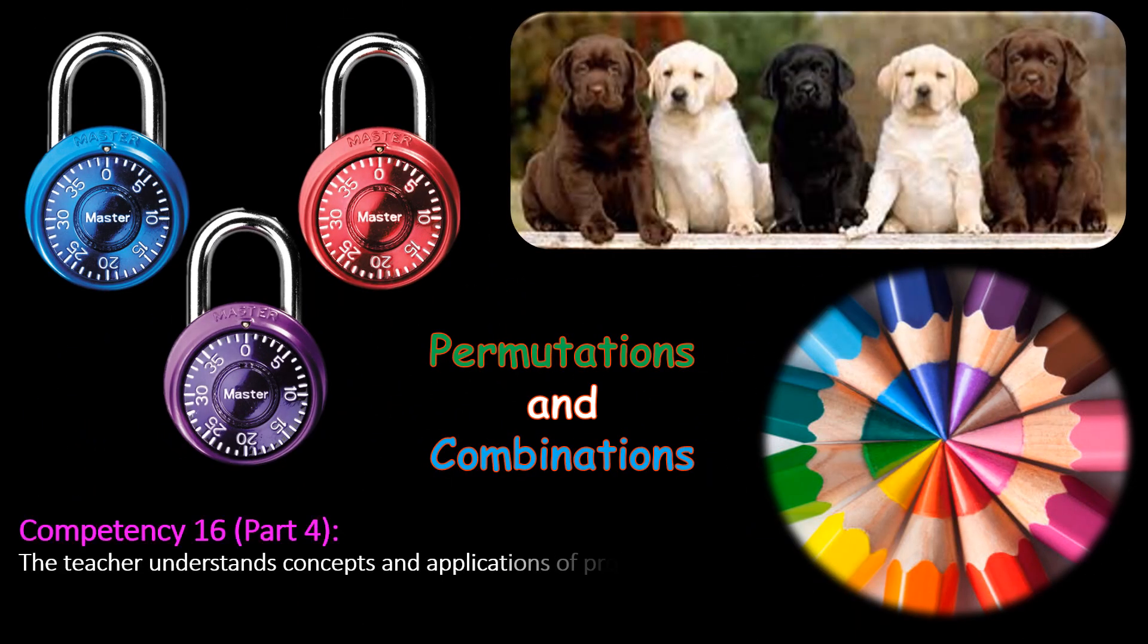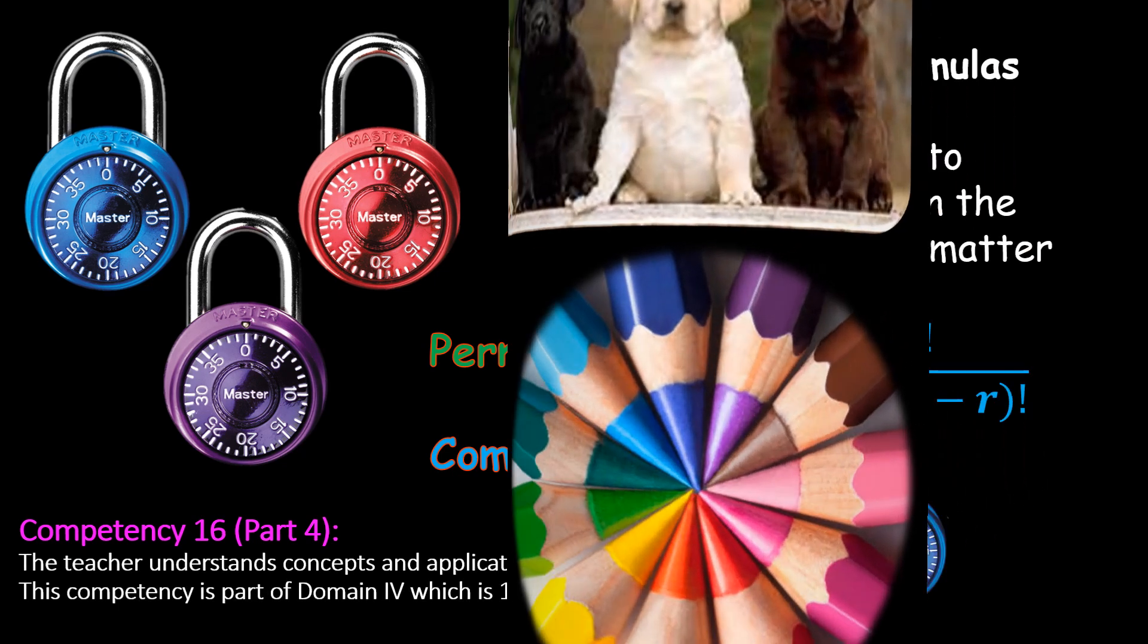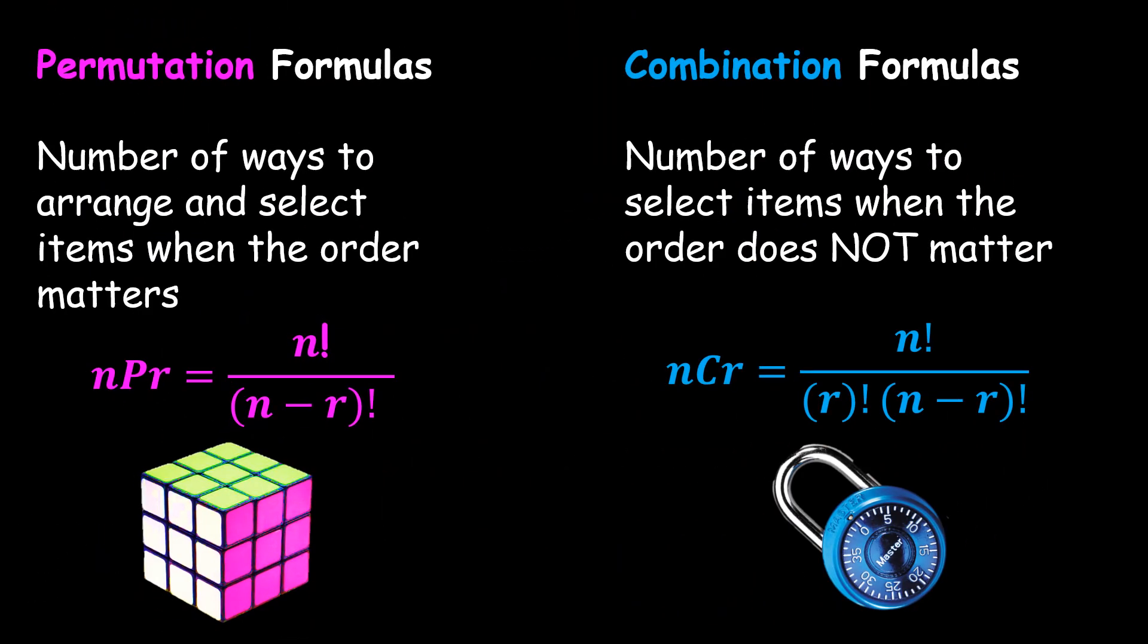In this video we are discussing permutation and combinations. A permutation relates to the number of ways to arrange and select items when the order matters, while a combination relates to the number of ways to select items when the order does not matter.